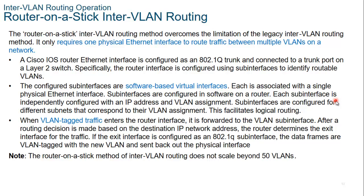A Cisco IOS router Ethernet interface is configured as an 802.1q trunk and connected to a trunk port on a layer 2 switch. The router interface is configured using sub-interfaces to identify routable VLANs. The configured sub-interfaces are software-based virtual interfaces, each associated with a single physical Ethernet interface. Each sub-interface is independently configured with an IP address and a VLAN assignment. When VLAN-tagged traffic enters the router interface, it is forwarded to the VLAN sub-interface, and after a routing decision is made based on the destination IP network address, the traffic exits — most probably through another sub-interface.